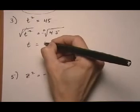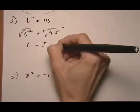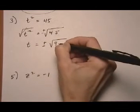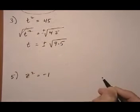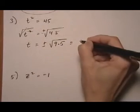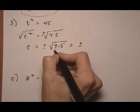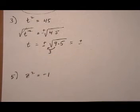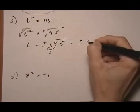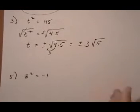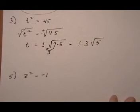So t equals plus or minus root 45, which is the same thing. It's not a perfect root, but it's the same thing as root of 9 times 5. And by the properties we studied about square roots in a previous module, this is going to be the same as plus or minus. We can take the square root of 9, which is 3, and pull it out. And then keep the root 5 as the leftover. So that would be our final answer there.